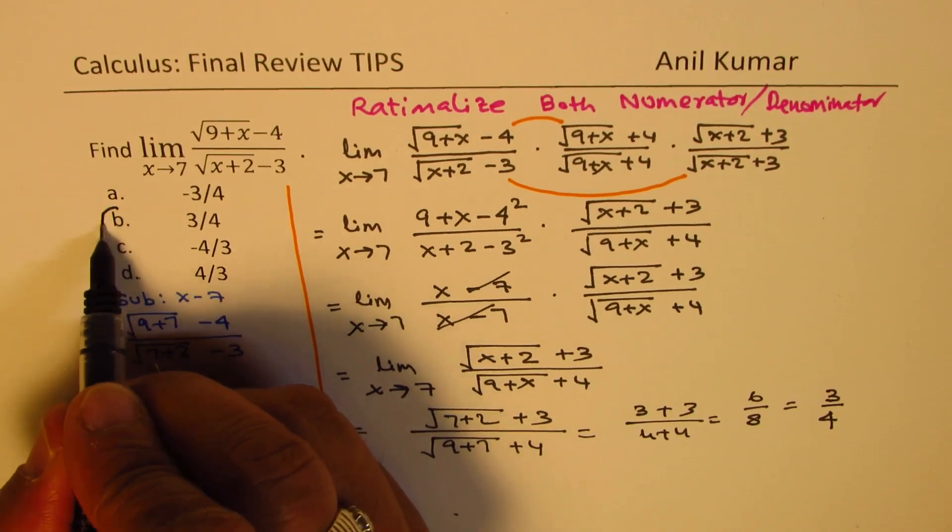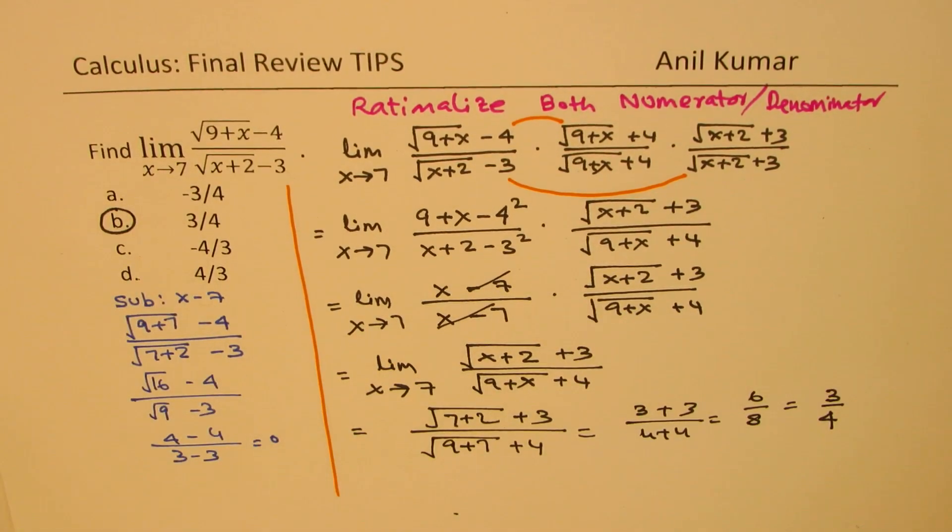So the solution is B, 3 over 4, positive. So that is how you could solve this question.